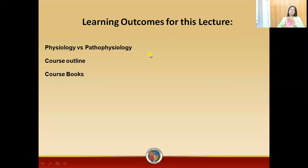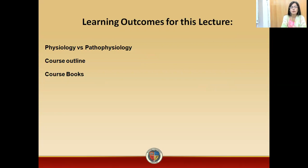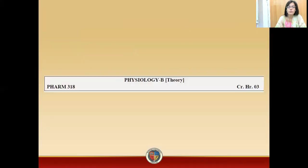In today's lecture, we will also see that we will study two different terms. The first one is Physiology and the second one is Pathophysiology. We will discuss the difference between these two terms later on in our lectures. In the Theory of Physiology B, the course code is 318 and the credit hours are 3.